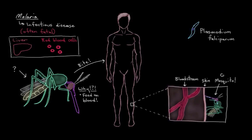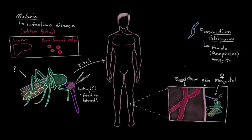The Plasmodium parasite is usually transmitted by a female Anopheles mosquito — Anopheles is just a genus — and that's because females feed on blood, while male mosquitoes feed on other things like nectar from flowers and plants. Once she's happily drinking our blood, some of the parasites from within her saliva swim over from inside her mouth to our bloodstream. That's step one of the infection.